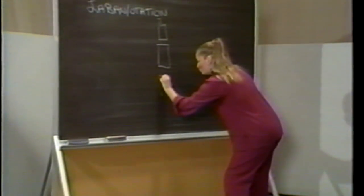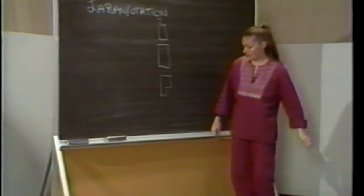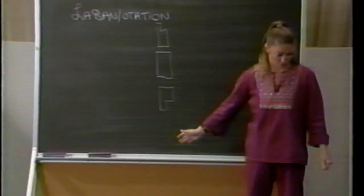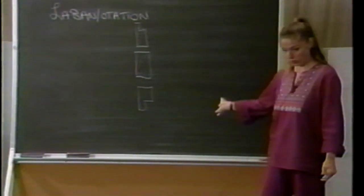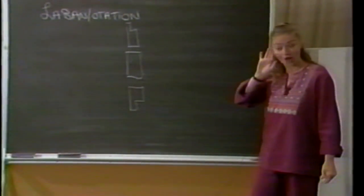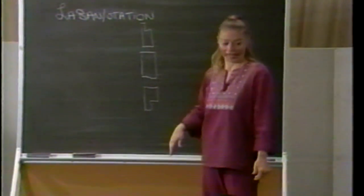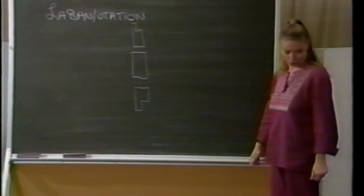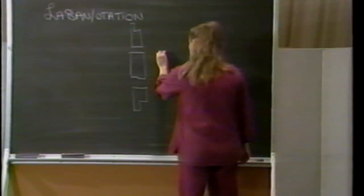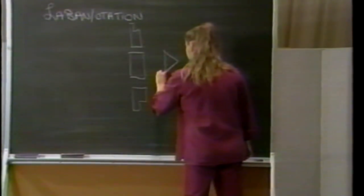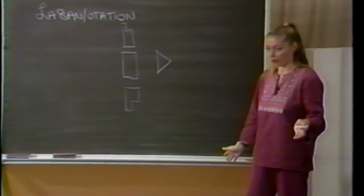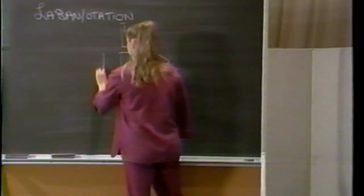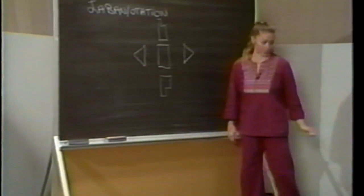The opposite is true for the symbol with a downward-pointing chimney — it indicates backwards movement. If the symbol points to the right, just like an arrow, then you're moving to the right. The same is true for the other side direction: moving to the left.